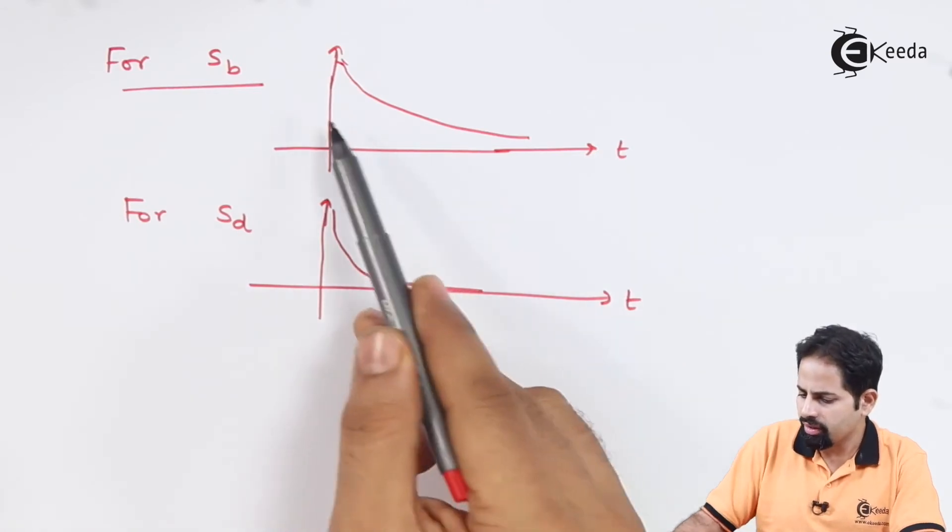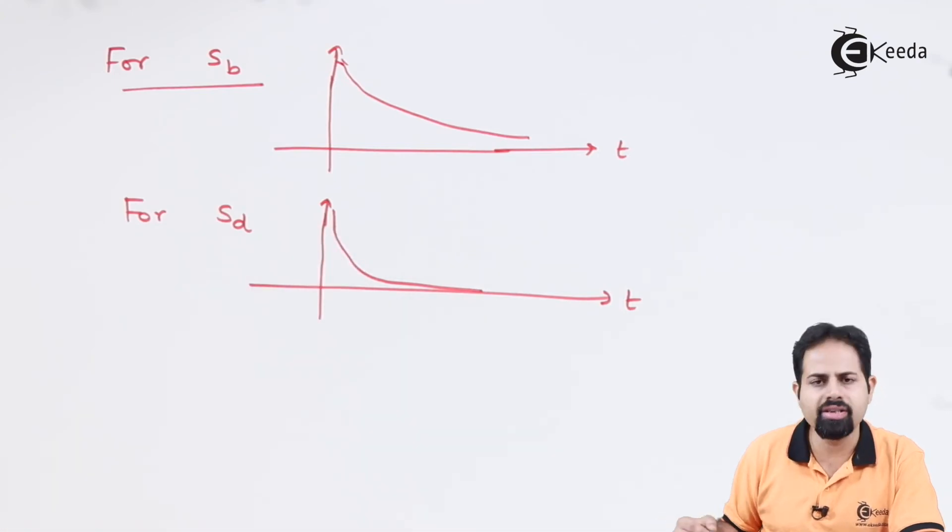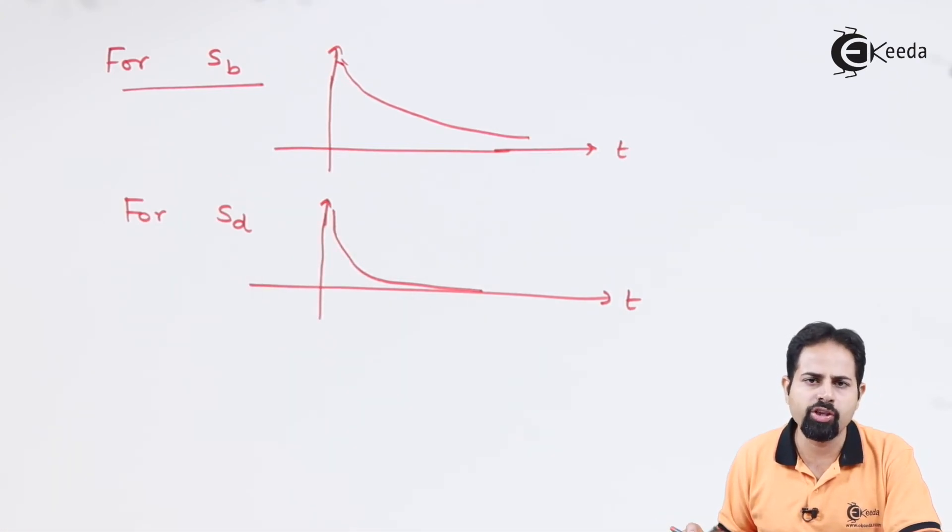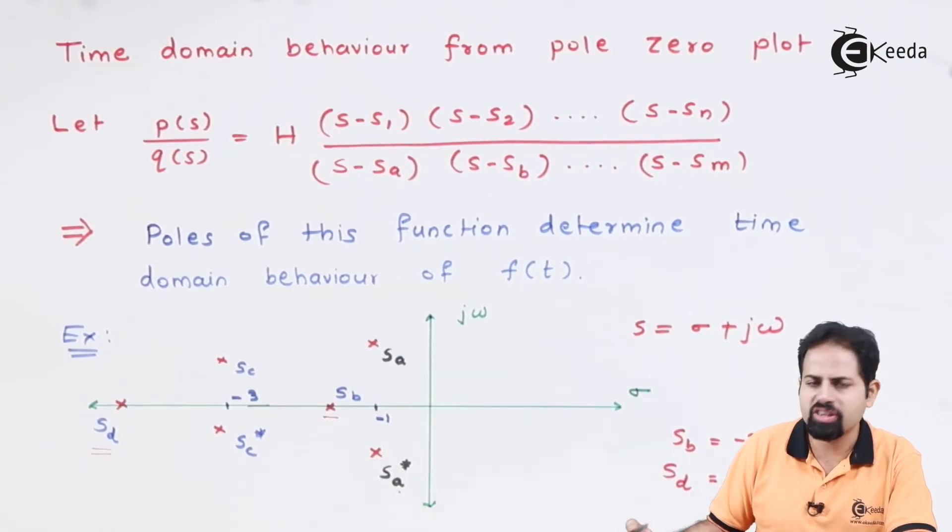So you can see the difference. This is the graph for SB which is decreasing gradually and for SD is decreasing suddenly because it is further away from the omega axis.